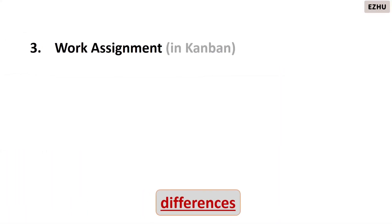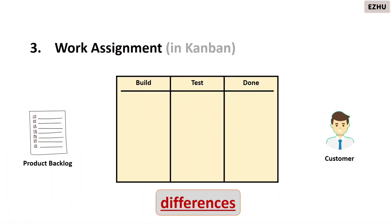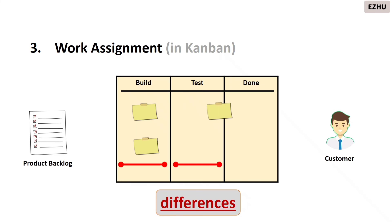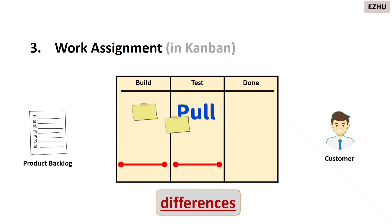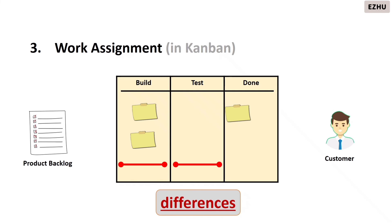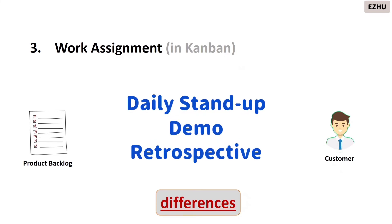In kanban there are no sprints and the work is managed differently — it is a continuous process and work is pulled based on the team's capacity. Once testing is completed, there is a pull trigger to the previous column to send additional work. Similar to scrum's sprint review and sprint retrospective, kanban also has similar ceremonies like daily stand-up, demo, and retrospective.